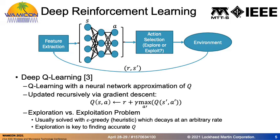For example, if you expect your neural network to be trained in a thousand steps, then at step one thousand you would want epsilon to be very small. Exploration is key to finding an accurate Q function because you want to obtain as much information as possible about each action in each state.